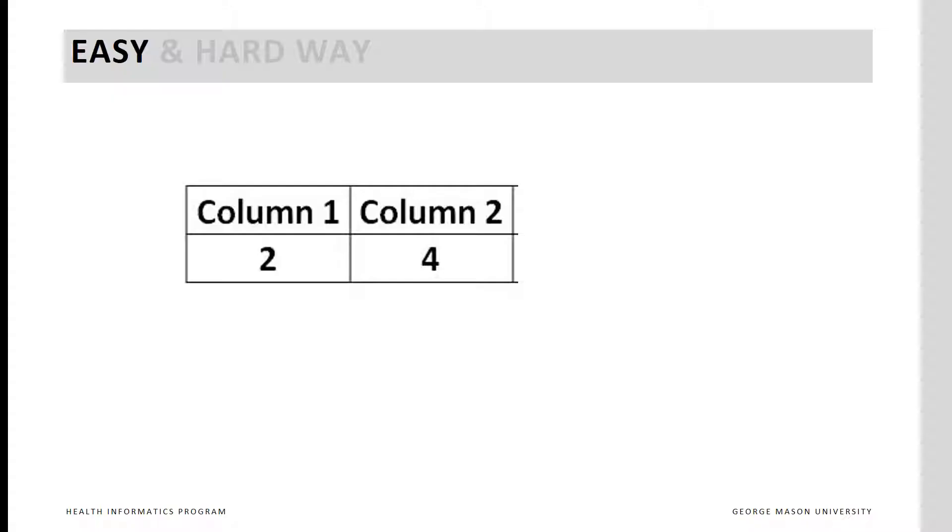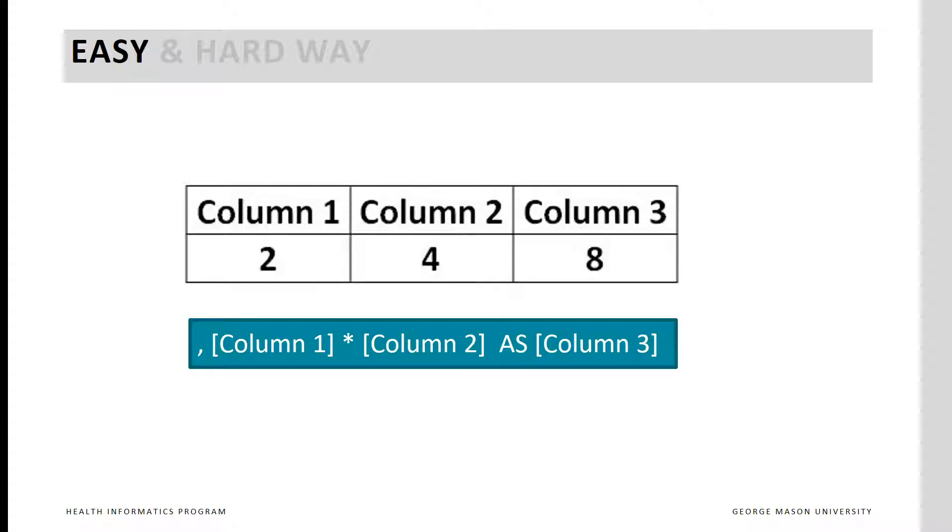If we want to calculate the product of values in different columns, it's easy to do so. We already have a function that does it for us. For example, the product of 2 and 4 in two different columns can be easily calculated. This SQL command puts the product of 2 times 4 in column 3. The star between the two column names is an internal math function that calculates the product of the two columns.